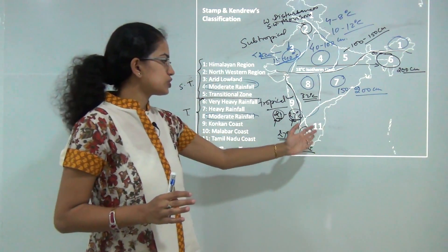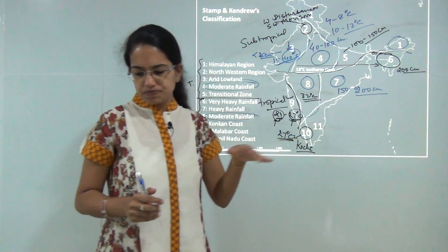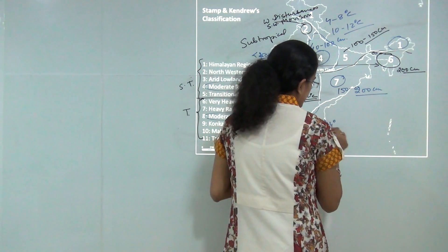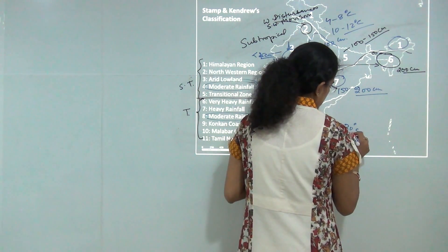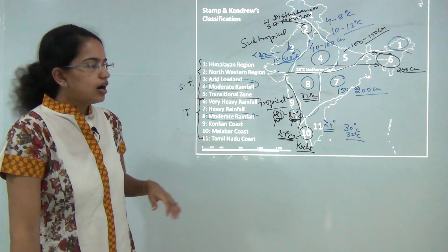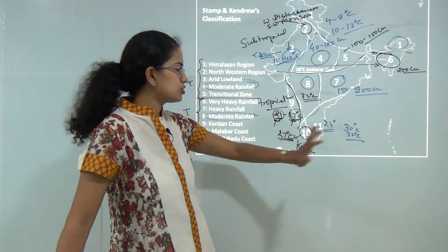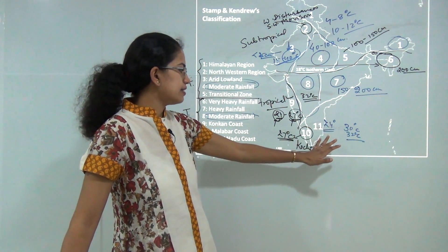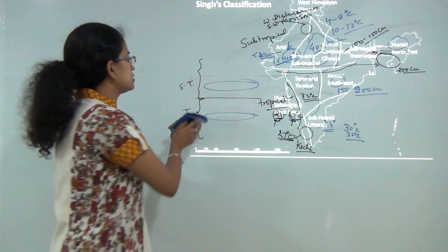Finally, Region 11 is the Tamil Nadu coast towards the east, including most of Tamil Nadu and eastern Andhra Pradesh. Temperature varies from 24 degrees in winter to 30 to 32 degrees Celsius in summer. Most rainfall here is caused by the retreating monsoon from October to December — winter rainfall.